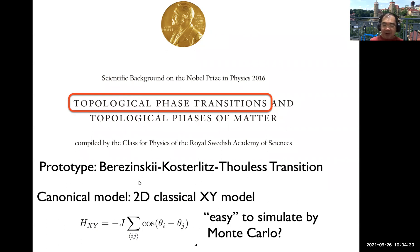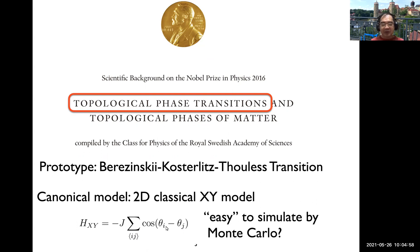I don't think I need to explain the BKT transition itself to this audience, but the canonical model showing this BKT transition is the 2D classical XY model — a spin model with a planar rotor degree of freedom. The Hamiltonian is given such that each site has an angular variable theta, and neighboring sites are coupled with cosine(theta_i minus theta_j). This is a very simple, classical spin model with no sign problem, so it is relatively easy to simulate by Monte Carlo. But still, the study of BKT transition is not so easy.